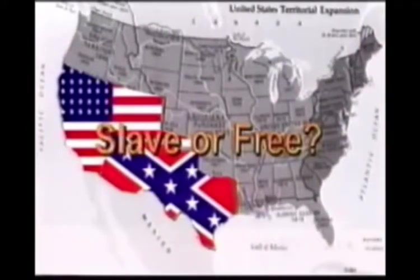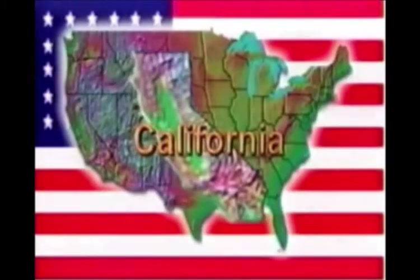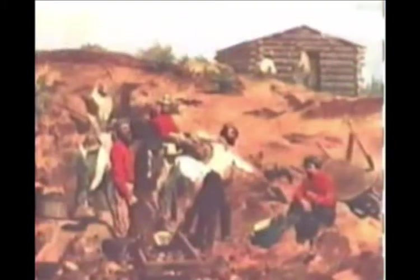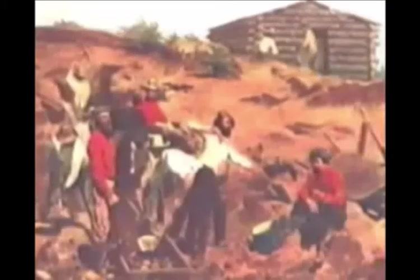California was another part of the problem. The territory, which had grown dramatically with the discovery of gold in 1849, applied for statehood as a free state. With sufficient population to be admitted as a state but eager to come in as a free state with no counterbalancing slave state, this would throw out of balance the equality in the Senate between slave and free states. Washington, D.C. itself not only permitted slavery but was a center for the slave trade industry.